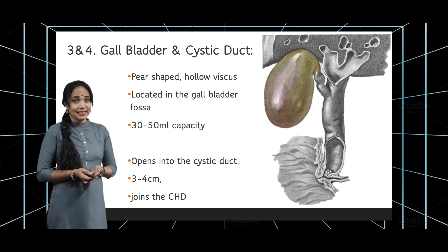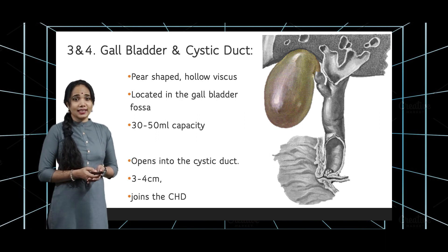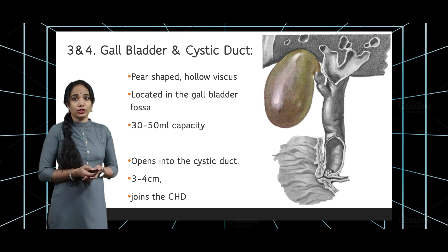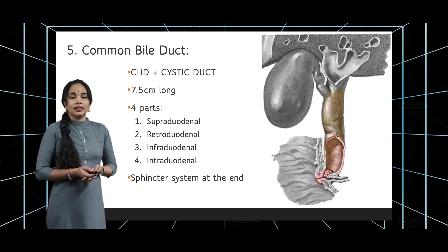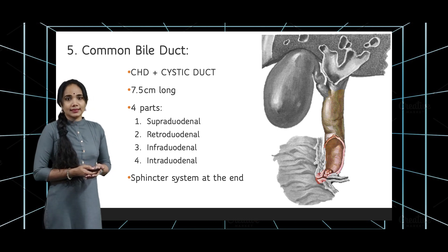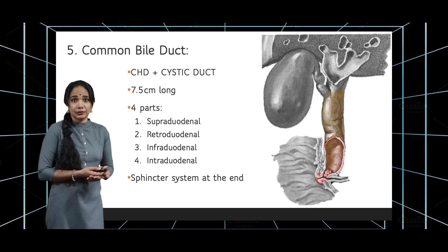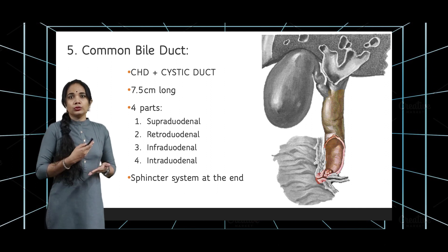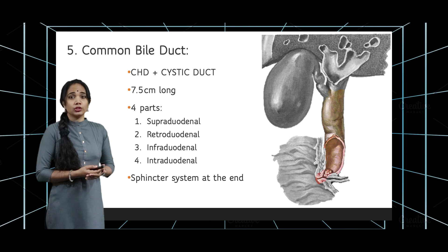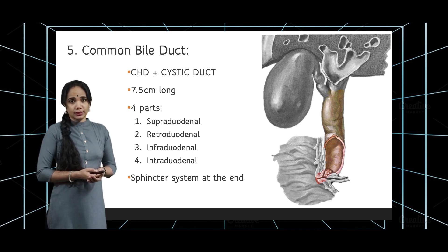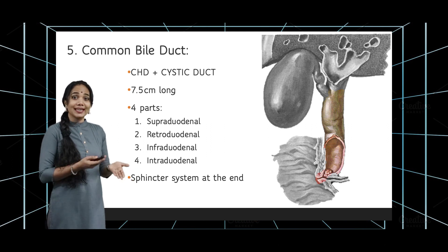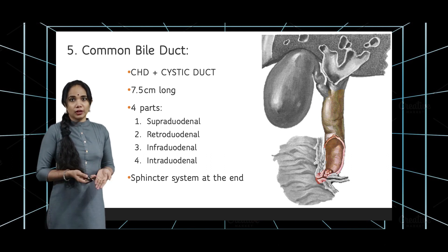The gallbladder has a capacity of around 50 ml. It opens into the cystic duct, which is around 3 to 4 centimeters long, and the cystic duct then joins the common hepatic duct. The common bile duct — formed by the common hepatic duct plus the cystic duct — is around 7.5 centimeters long. With respect to its relation to the duodenum, the common bile duct is divided into four parts: supraduodenal, retroduodenal, infraduodenal, and intraduodenal.